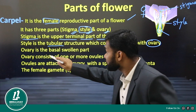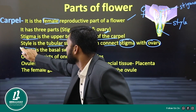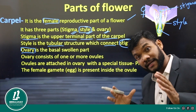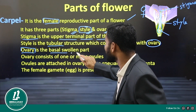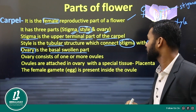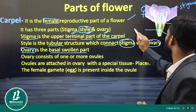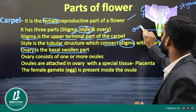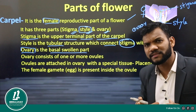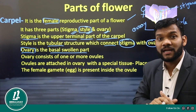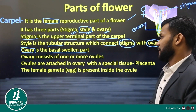The third part of the carpel is the ovary. The ovary is the basal swollen part — the thicker lower portion of the carpel. This is what is called the ovary.